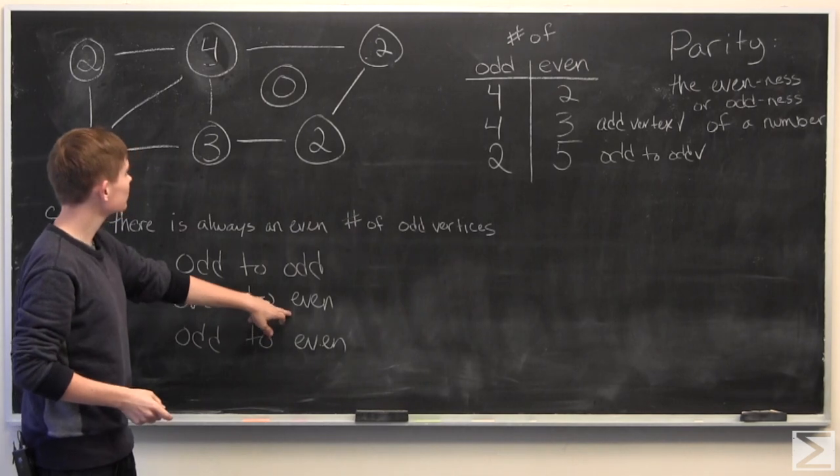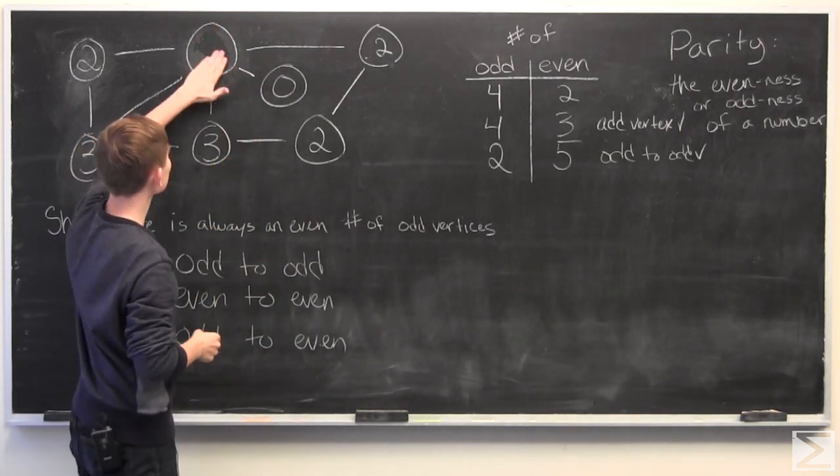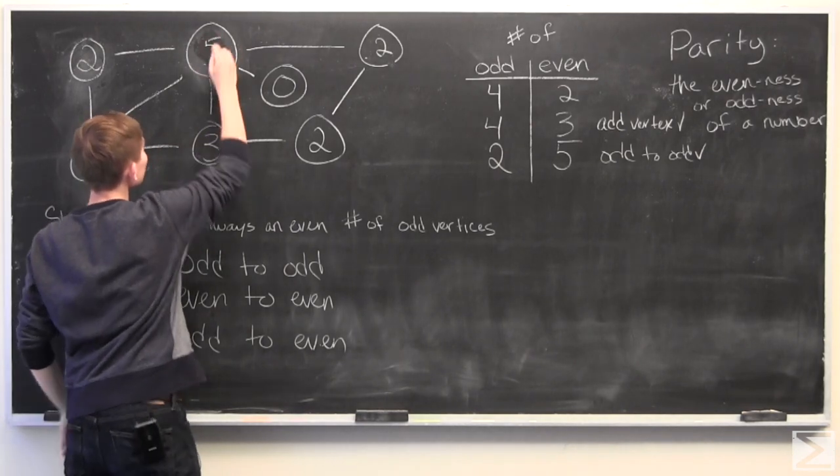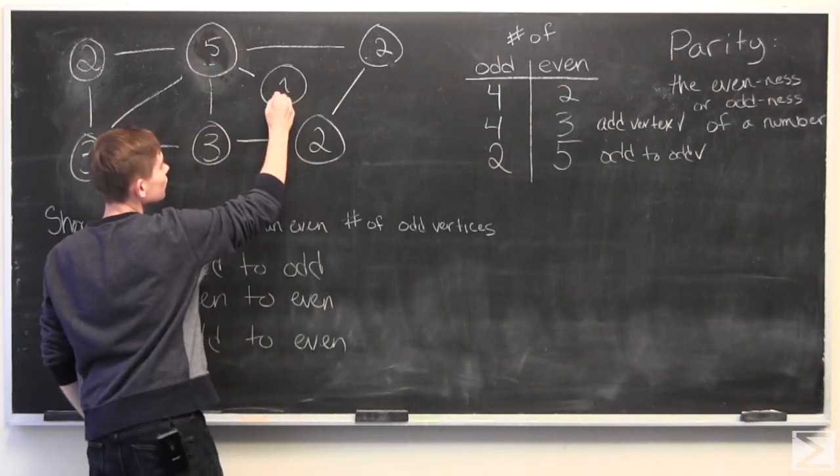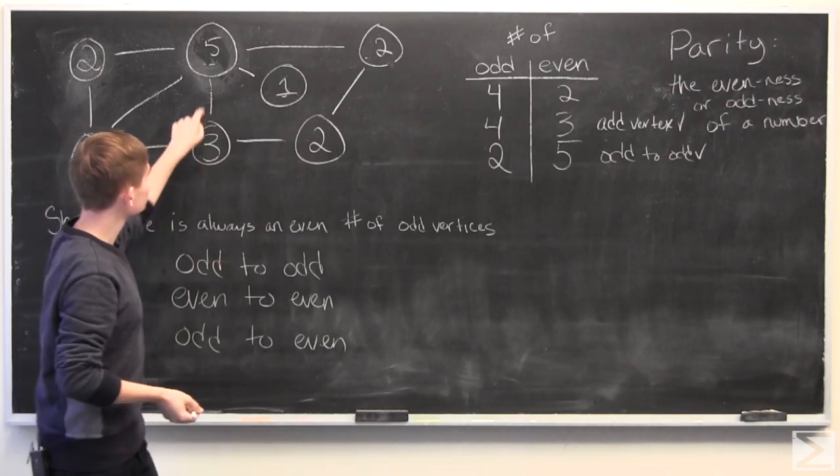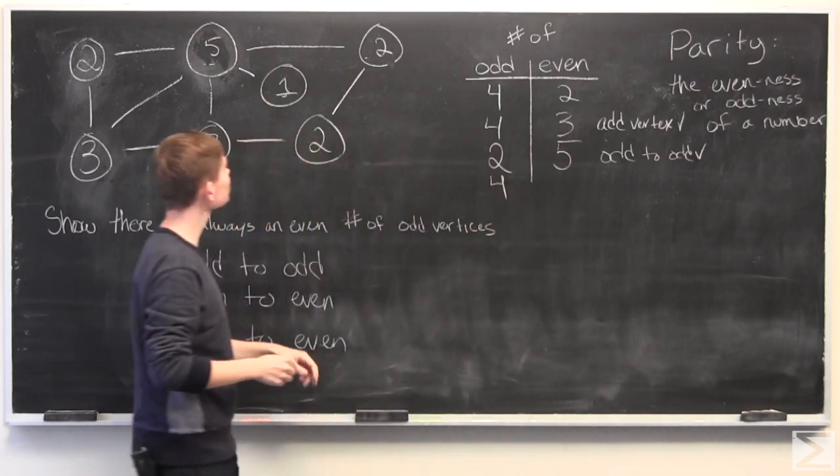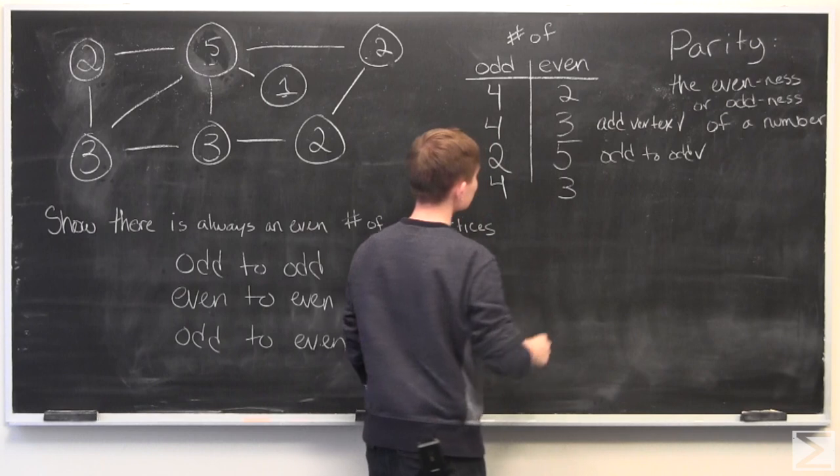Let's look at even to even. So if we add an edge there, this will become five. This one, now that it has an edge, will become one. We count them again. We have one, two, three, four odd vertices. We have one, two, three even vertices.